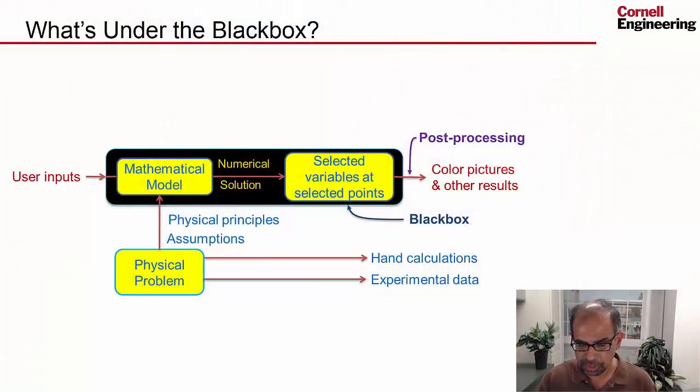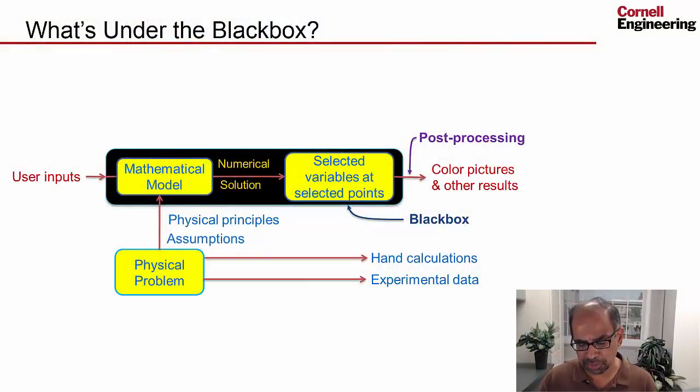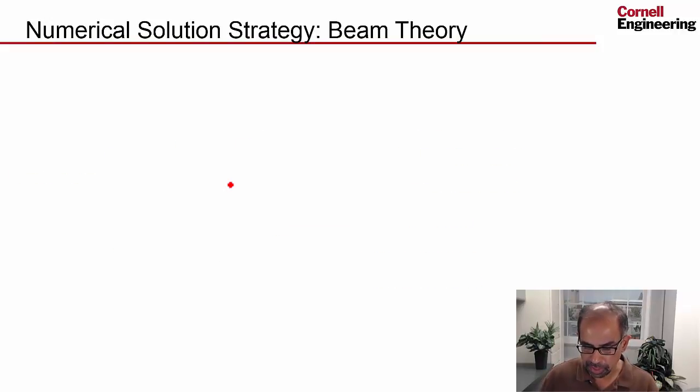And again, we are going to understand that by analogy to the Euler-Bernoulli beam theory. So if I go to what's under the black box framework, I'm moving from talking about the mathematical model. In that case, we are focusing on the key physical principles and assumptions. So we've done that, and let's move on to thinking about the numerical solution strategy for that mathematical model.